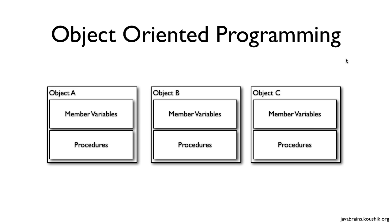In object-oriented programming, you wouldn't think of functions when trying to solve a problem. You would think of individual entities as objects and write objects that mirror different entities in your problem space. You would have object A, B, and C, and each object would contain member variables as well as methods. So you have encapsulated entities and you can design more complex code because you have a cleaner design and separation of concerns.